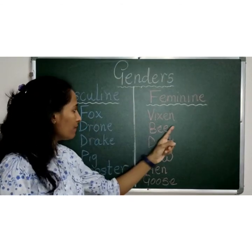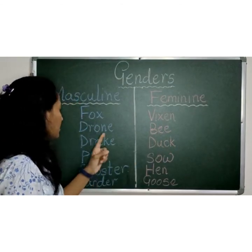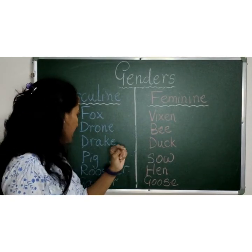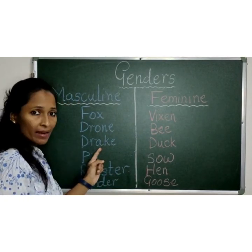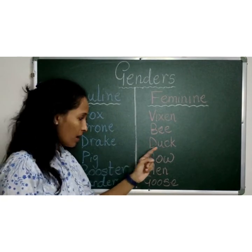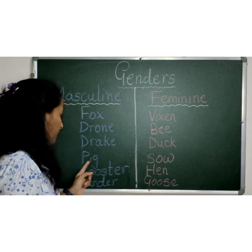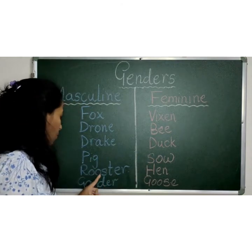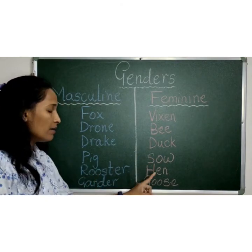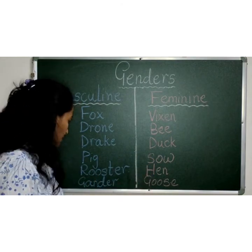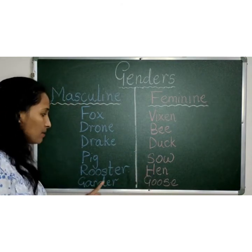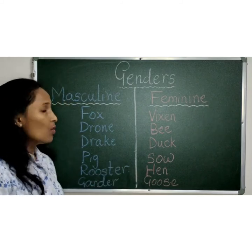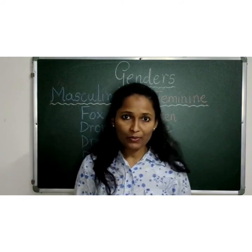Fox — vixen. Drone — bee. Drake — duck. Pig — sow. Rooster — hen. Gander — goose. Hope you liked the video!